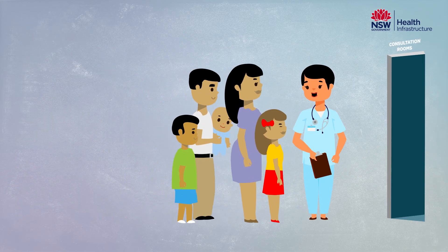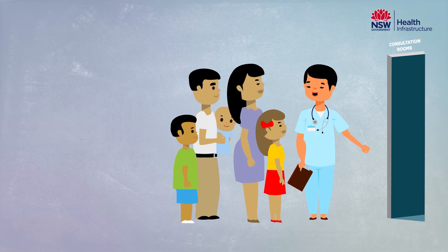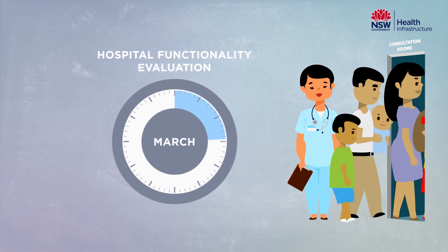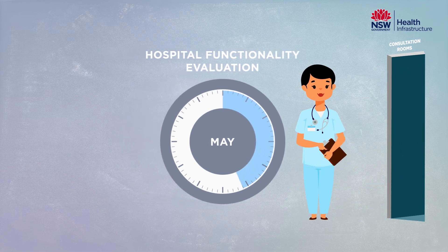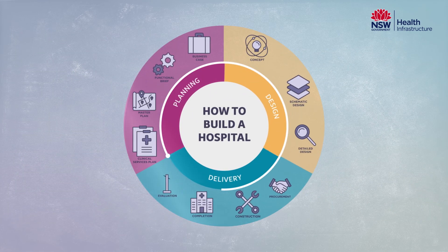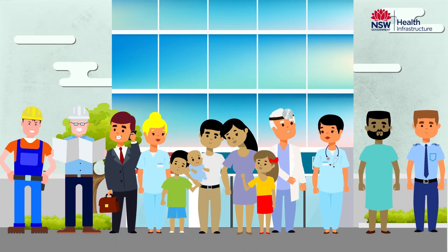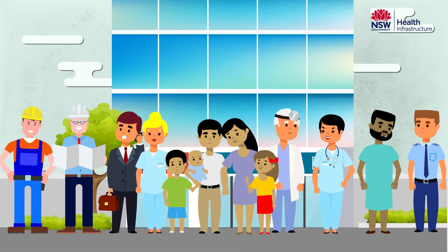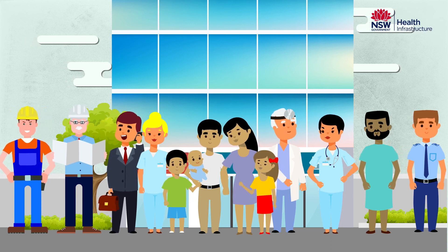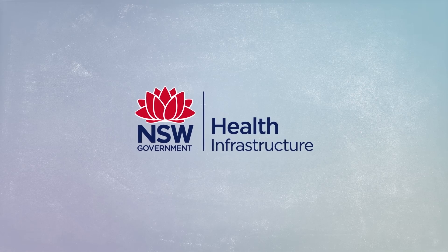Once staff and patients have moved into their new facility, Health Infrastructure continues to evaluate and assess the functionality of the new facility for several months. This process also helps to inform our future hospital projects. This extensive planning, design and delivery process ensures that staff, clinicians, patients and visitors have a contemporary, bright and welcoming facility that meets their needs and the needs of future generations.